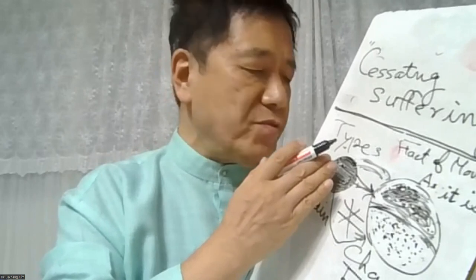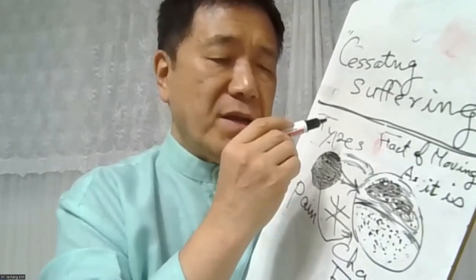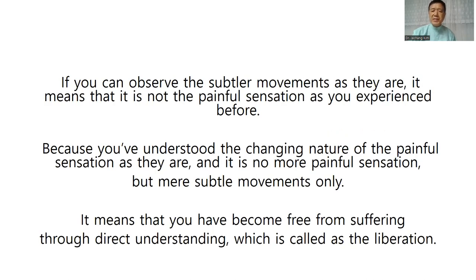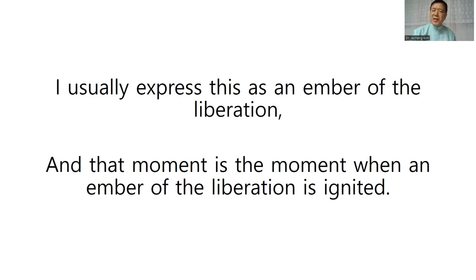So the principle is very clear. If you want to cease the painful sensation, approach it directly and observe two objects: first, the types of sensation — achedness, numbness, shivering, bloatedness, etc. — and at the same time, observe the fact of changing, the fact of moving, as it is. Therefore, the scientific meditation formula is: the moment of maintaining perfect equanimity while noticing the types of sensation and the fact of changing as they are is the moment when an ember of enlightenment is ignited. If you can observe the subtle movements as they are, it means the painful sensation has been understood in its changing nature and it is no more painful sensation but mere subtle movements only — you have become free from suffering through direct understanding, which is called liberation. I express this as an ember of liberation.